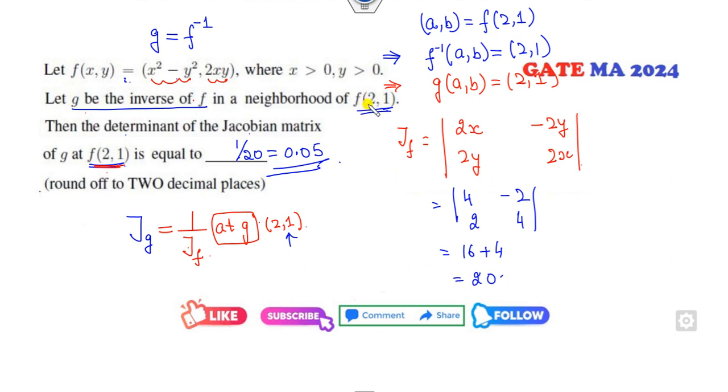And you can see F of 2, 1, by using this inverse property, I found the value of G is my 2, 1. So that is a simple answer of this problem in a quick 10 to 15 second time period.